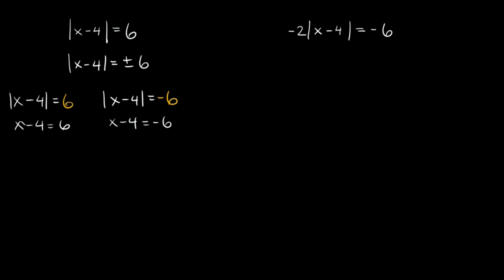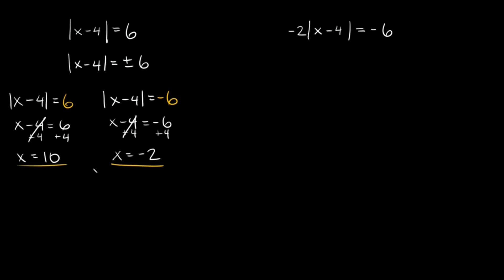Now we can drop the absolute value signs and solve normally. On the first equation, isolating x by adding 4 to both sides, we get x equals 6 plus 4, which is 10. On the second equation, adding 4 to both sides gives x equals negative 6 plus 4, which is negative 2. So our two answers are 10 and negative 2.